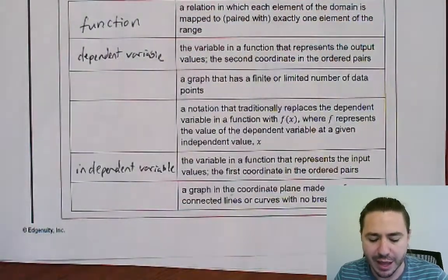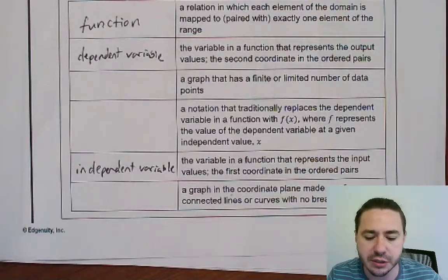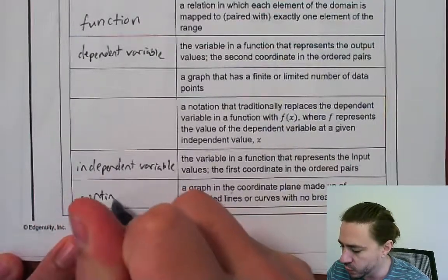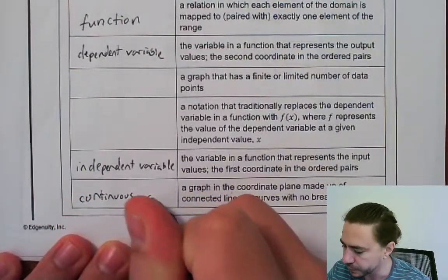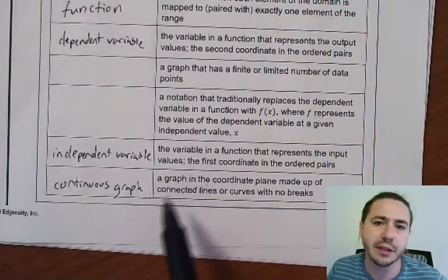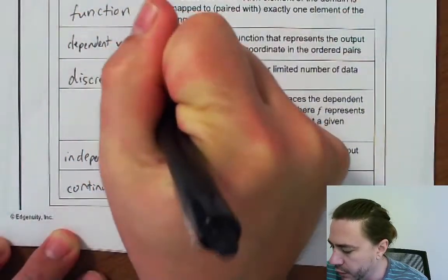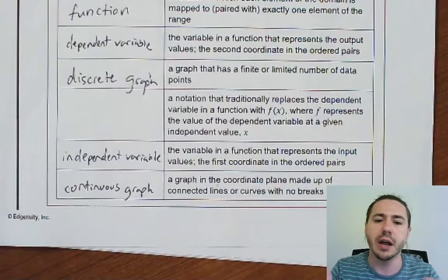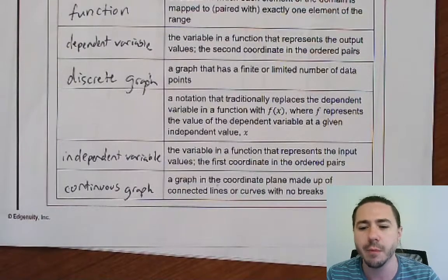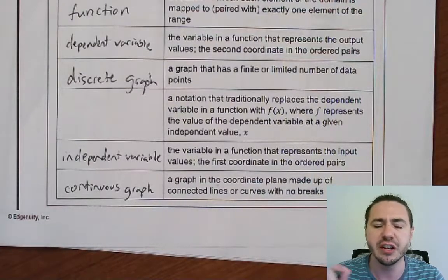Last time we talked about two different types of graphs: continuous graphs and discrete graphs. A continuous graph is one in which all the points are connected — it could be a line, a curve, something you could draw without picking up your pencil. A discrete graph is one with individual points that are not connected, a finite number of data points, like a scatterplot. The important part is that it's individual points instead of being connected.